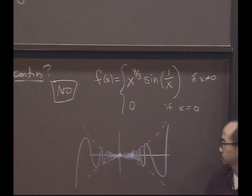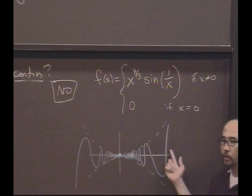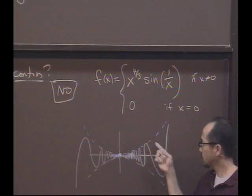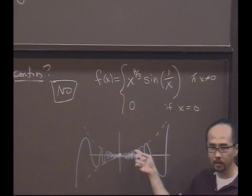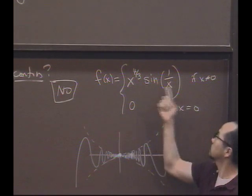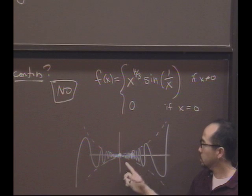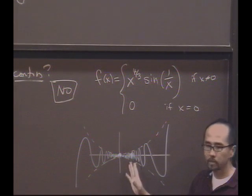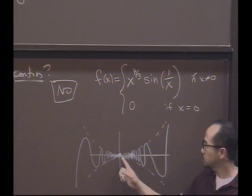Tell me why. Well, away from zero, it's clearly differentiable, right? Just because it's defined by this function sine 1 over x. Okay. But what's happening? Where's the only place you might worry if it's differentiable? Zero.